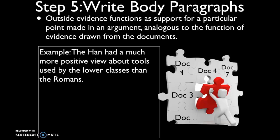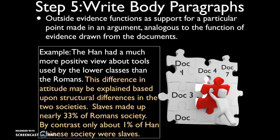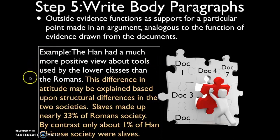For example, if your topic sentence is 'The Han had a much more positive view about tools used by the lower classes than the Romans,' you could add outside evidence like: 'This difference in attitude may be explained by the structural differences in the two societies. Slaves made up nearly 33% of Roman society. By contrast, only about 1% of Han Chinese society were slaves.' That's not information from the documents, but it functions as support for the claim about differing attitudes toward lower-class tools.